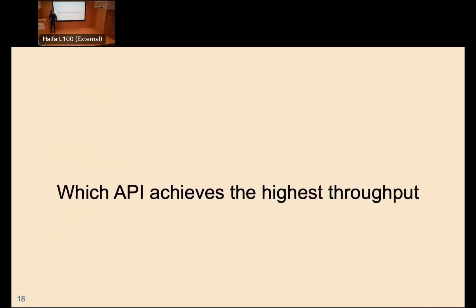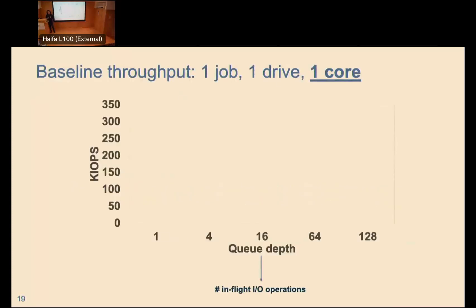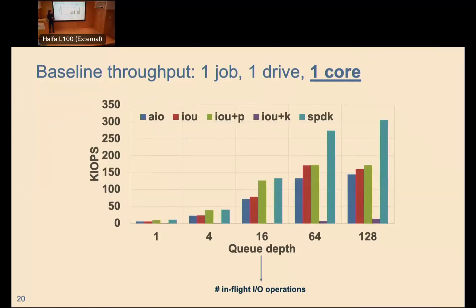The first question is which API achieves the highest throughput. We run a baseline test: one FIO job, one process, one drive, one core. Importantly, we actually disable the other 19 cores — the whole system runs on one core. We measure IOPS as we vary the queue depth (number of in-flight IO operations). Expectably, SPDK is the best, followed by a mix of io_uring variants, and LibAIO is usually the worst.